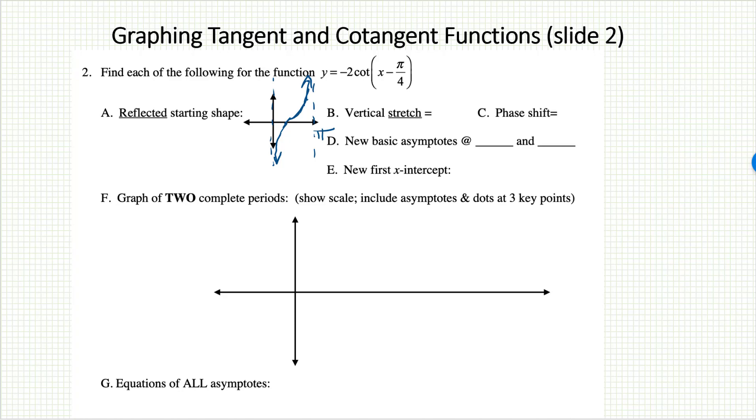There is a vertical stretch this time because of the multiplying 2 on the outside, so all of our y values will double. There is a phase shift as well because of that inner parentheses. The phase shift is always the opposite of what I see. I see a negative, but I know the phase shift will be a positive pi over 4, meaning pi over 4 to the right.